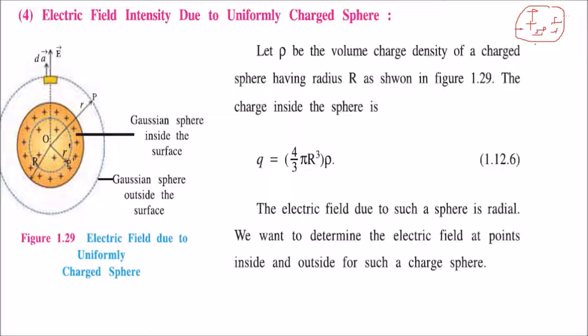Because this is a spherical structure, we take ρ (rho) as the volume charge density. This ρ is given by q divided by volume, and the volume for a sphere is 4/3 π r³.